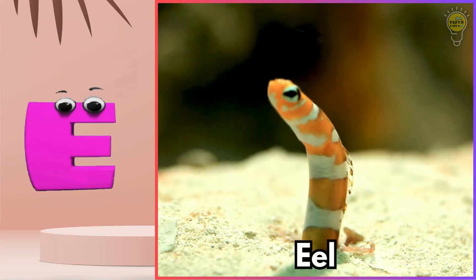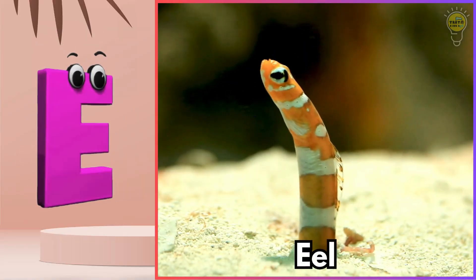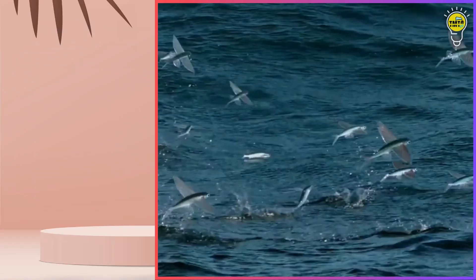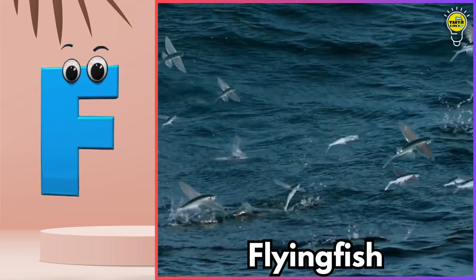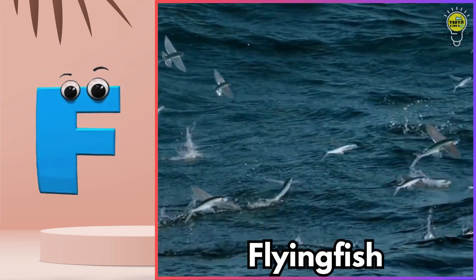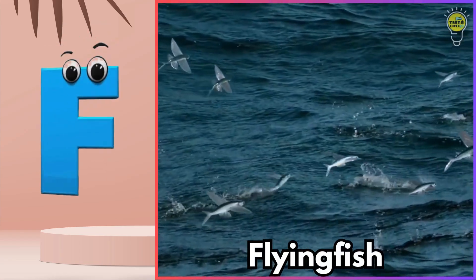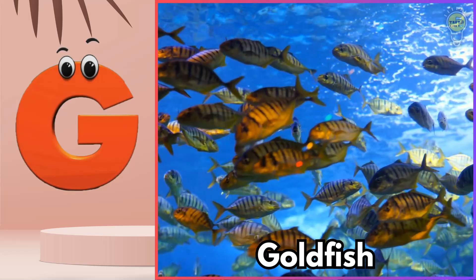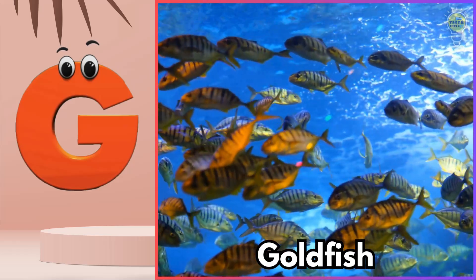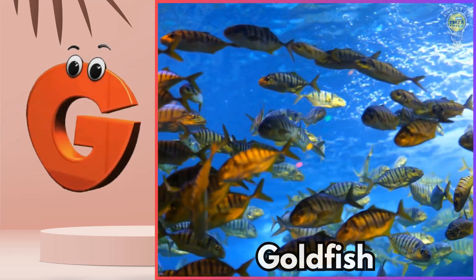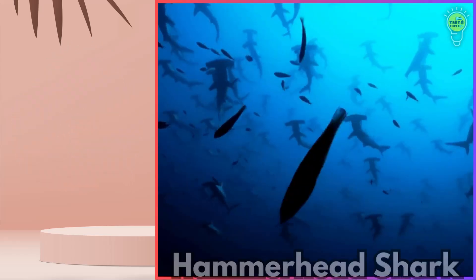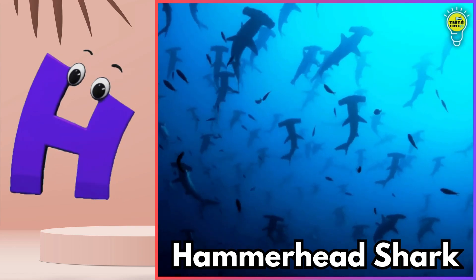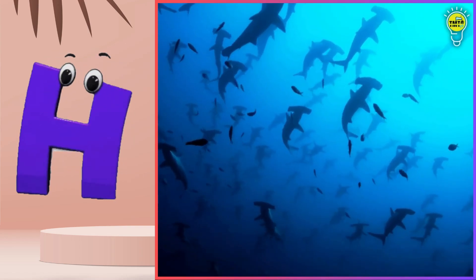E is for eel. Ah, eel. F is for flying fish. Fuh, flying fish. G is for goldfish. Guh, goldfish. H is for hammerhead shark. Ha, hammerhead shark.